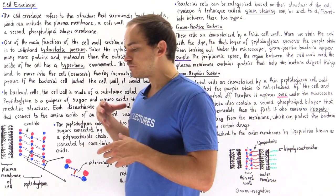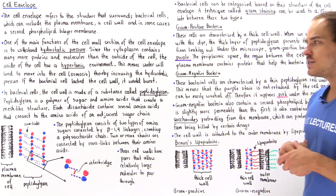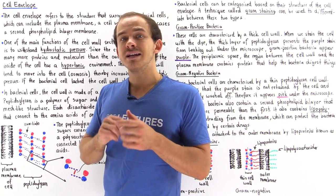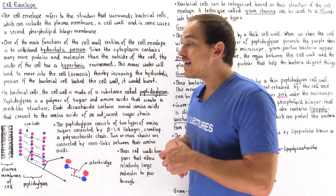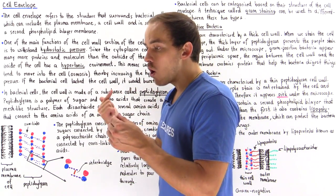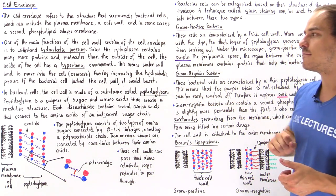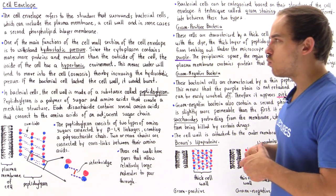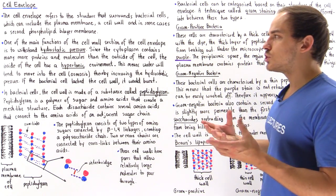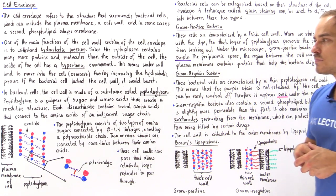As the water from the outside flows into the inside, that increases the hydrostatic pressure — the turgor pressure — inside our bacterial cell. The cell wall is able to resist that increase in hydrostatic pressure. If that cell wall wasn't there, as osmosis takes place and more and more water flows into the cell, that cell would eventually burst. So the cell wall basically functions to withstand the hydrostatic pressure that exists inside our cell.